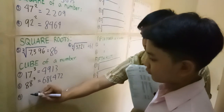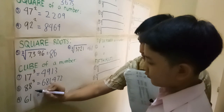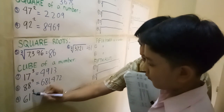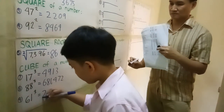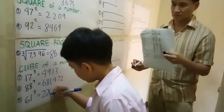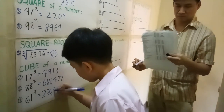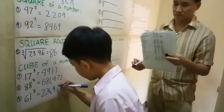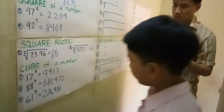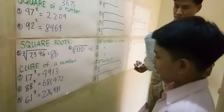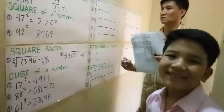Bravo, Joshua. What is 61 cubed? 226,981. Bravo.